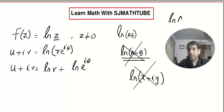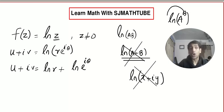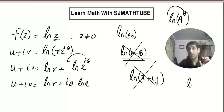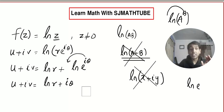What is log a^b? It is b·log a. So u + iv = log r + iθ·log e. Since log e = 1, this simplifies to u + iv = log r + iθ. Therefore u = log r and v = θ.